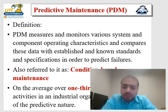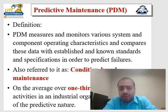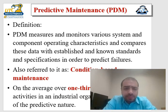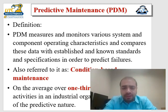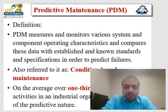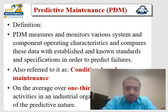Predictive maintenance basically measures and monitors a variety of system and component operating characteristics, and compares this data with established standards and specifications in order to predict a failure. You have to collect data and compare it to previously set standards. Another name for it is condition-based maintenance.